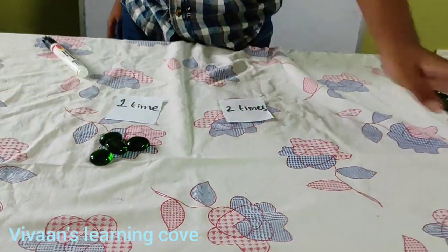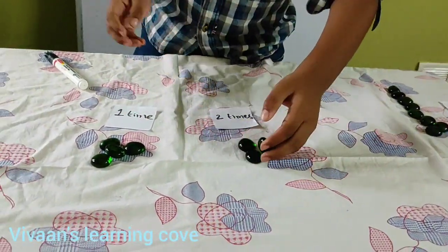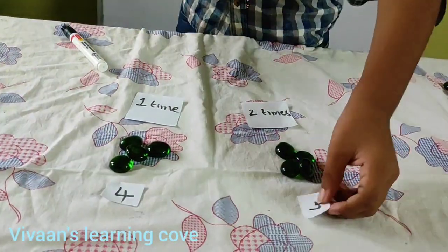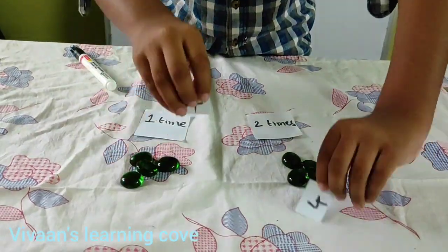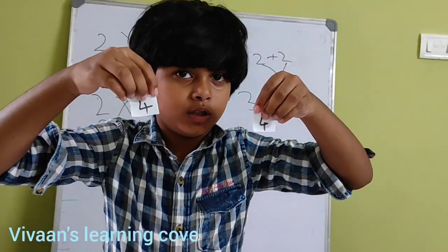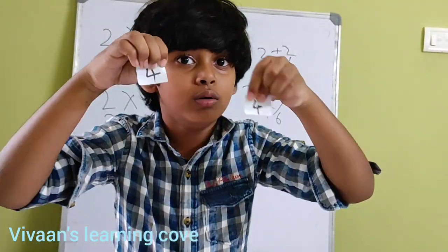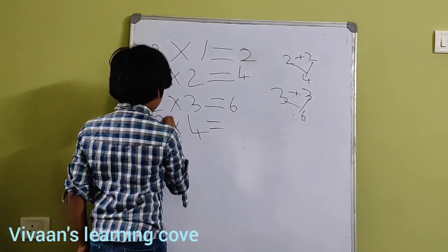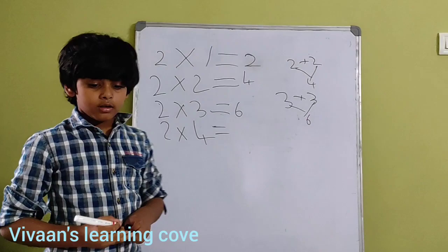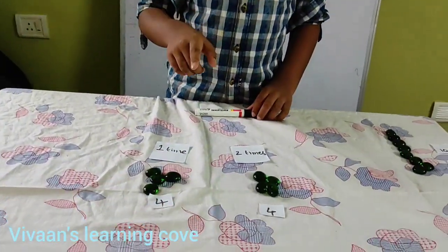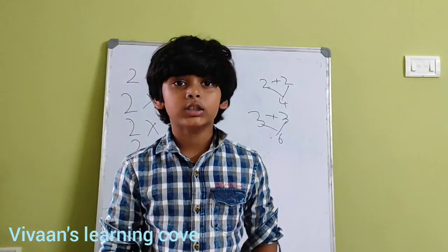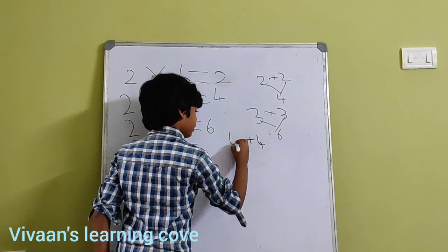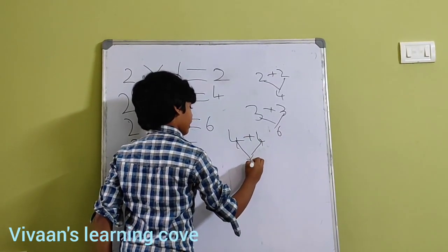Now 4 pebbles 1 time, and I will take 4 pebbles 2 times. I am going to take these cards and represent them 1 time and 2 times. We know there are 8 pebbles. I have 2 fours, so this means 2 times 4. We write it like: 2 times 4 equal to 8. We should write it as 4 plus 4 equal to 8.